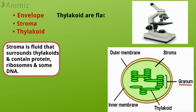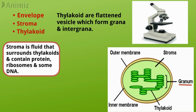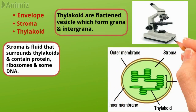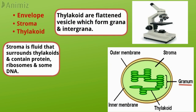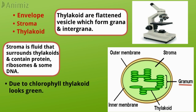Thylakoids are flattened vesicles which arrange themselves to form grana and intergrana. A granum appears to be a pile of thylakoids stacked on each other like coins. On average, there are 50 or more thylakoids piled to form one granum. Chlorophyll molecules are arranged on the layers of the thylakoid, which is why a granum appears green. Chloroplasts are self-replicating bodies.